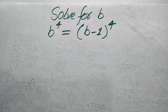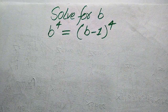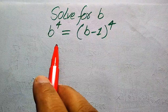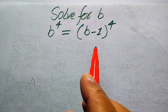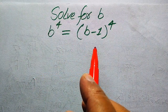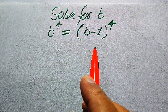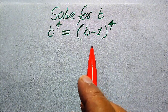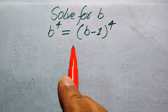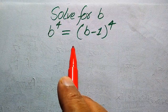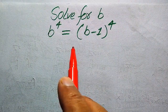Hello everyone. How to solve this problem for the values of b, if we have b to the power of 4 equals to b minus 1 to the power of 4, and we solve this problem for all the values of b. So here we need to find all 4, or less than 4, roots of this equation.